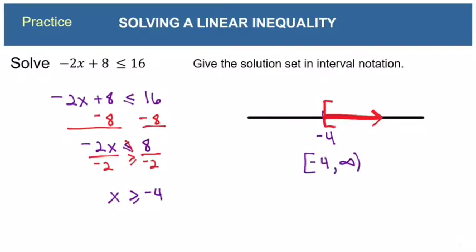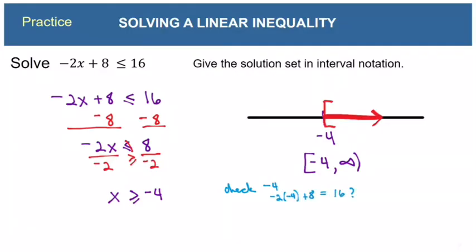Let me show you how to check an inequality. There are two parts: check that negative 4 is the right number, and check that the shading is in the right direction. For the number, plug it in as you would check an equation — both sides should be equal. Negative 2 times negative 4 plus 8: that's 8 plus 8, which is 16. That checks out.